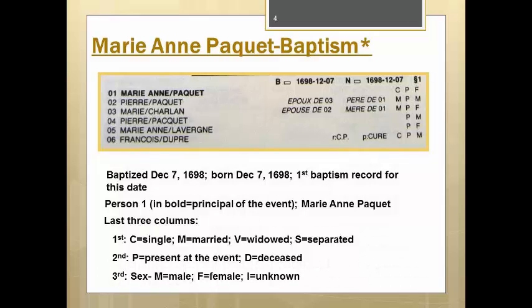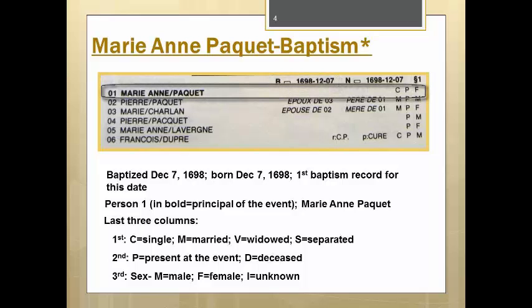Now you take that information and search through the baptism records chronologically until you get to the year 1698. Then you go towards the end of that year until you find the records that were recorded on December 7th. You look at the first record for that date and you will see Marie-Anne Paquet as the baptized child. At the end of the line with her name on it, you see three columns of letters: C, P, and F.